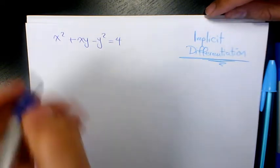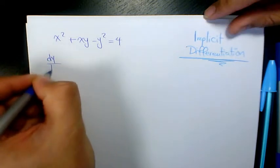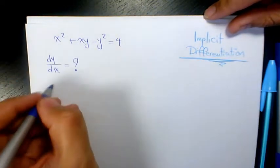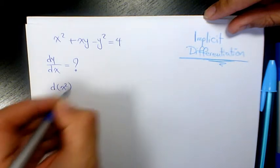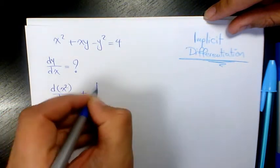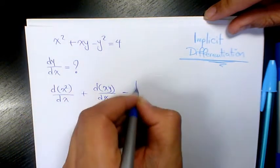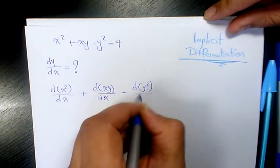We need to find dy/dx using implicit differentiation. So the derivative of x² with respect to x, plus the derivative of xy with respect to x, minus the derivative of y² with respect to x...